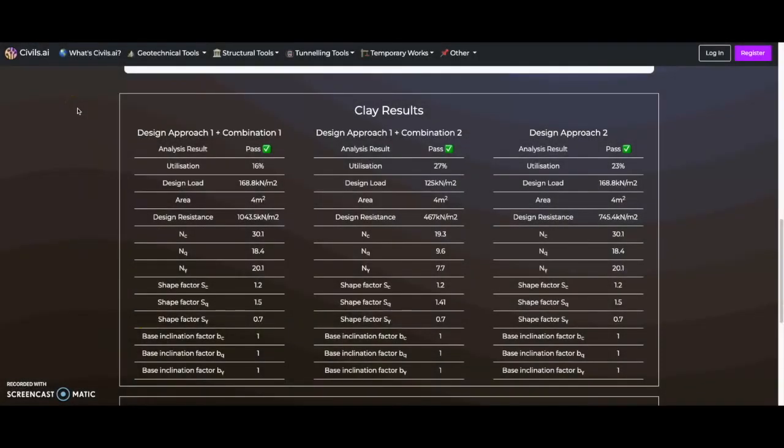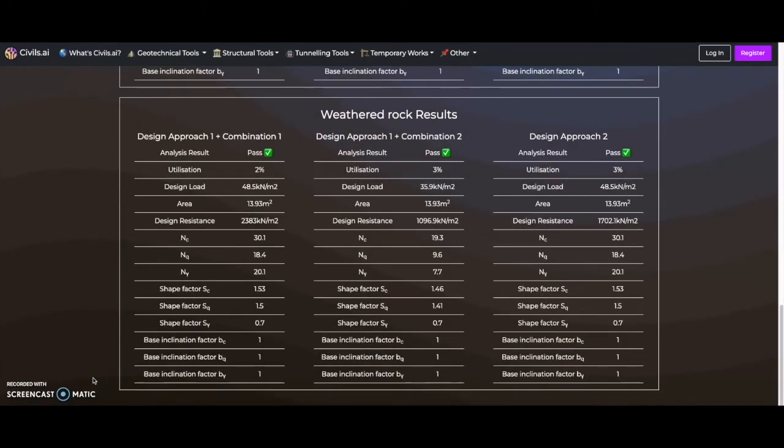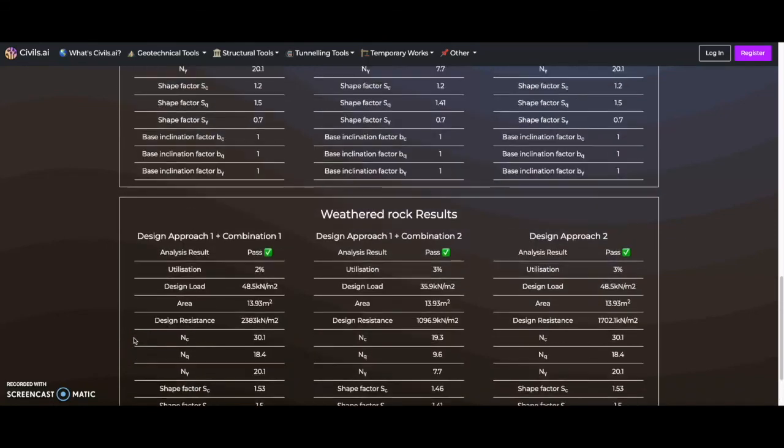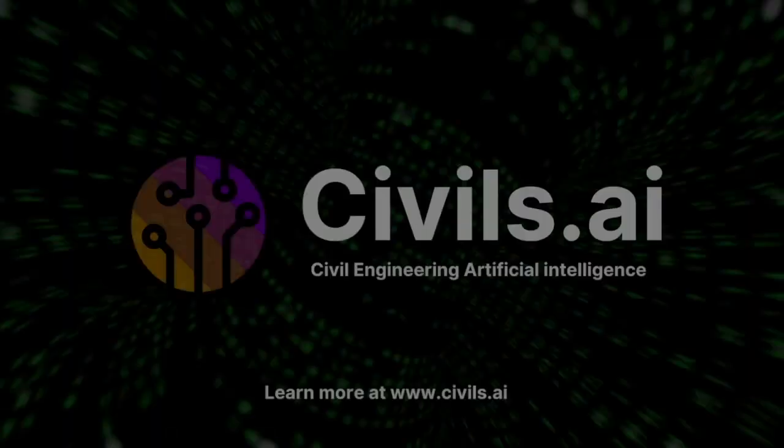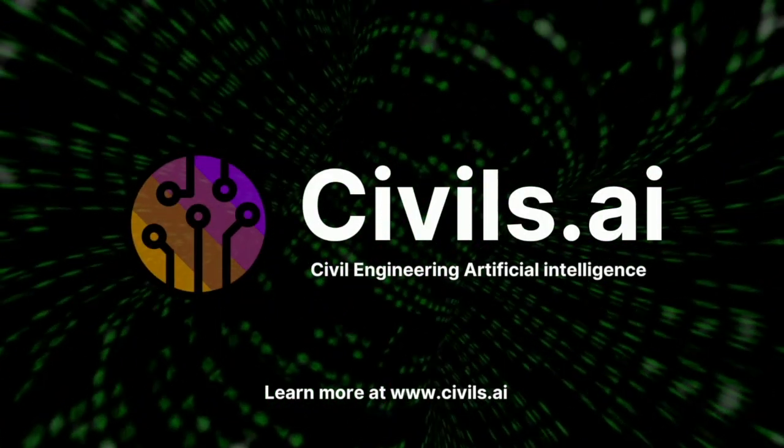After using the CIVILS-AI bearing capacity analysis, results of the Terzaghi equations are presented for each soil layer beneath the foundation base. Advanced properties are also calculated, which will be covered in a future video. The worst case load and resistance for all soil layers is then used to calculate the final result and utilization. Check out www.civils.ai for more information.